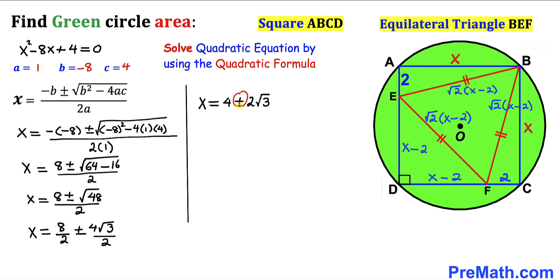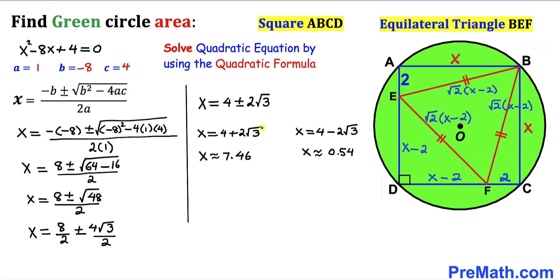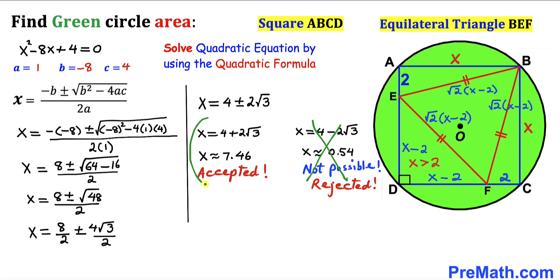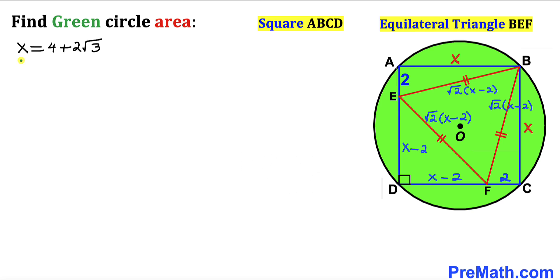Evaluating the two solutions: x = 4 + 2√3 ≈ 7.46 and x = 4 − 2√3 ≈ 0.54. Since the side length x − 2 must be positive, x must be greater than 2. We reject x ≈ 0.54 and accept x = 4 + 2√3.